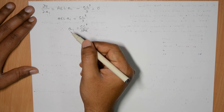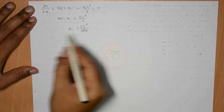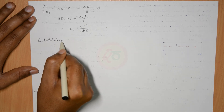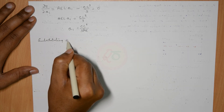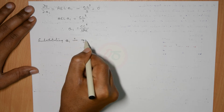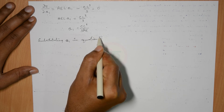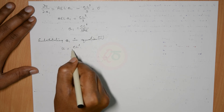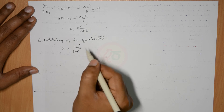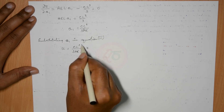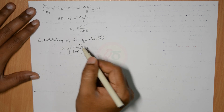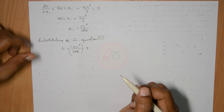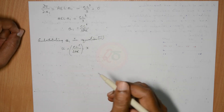Substituting A1 back into equation 3, which is U equals A1 x, we get the displacement: U equals CL²/(3AE) times x. This is the final solution for the given problem. The problem asks us to determine the displacement of the bar at the end, and this expression gives it.